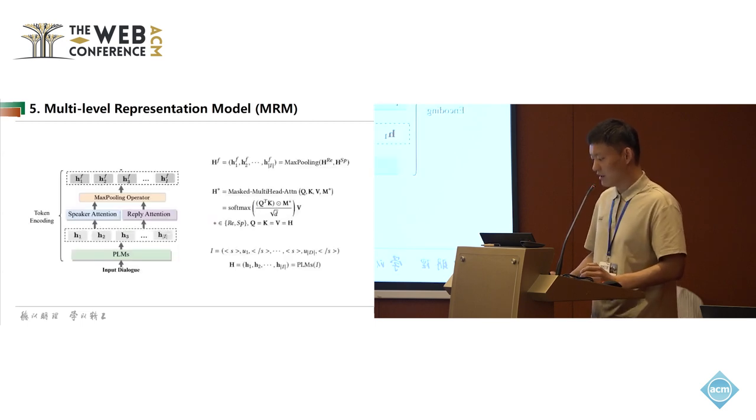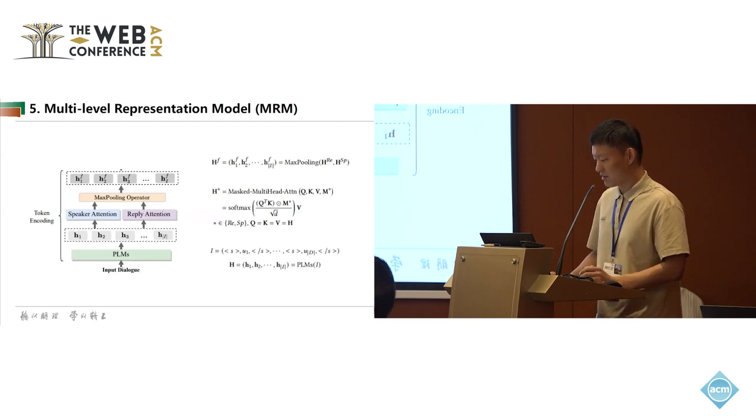At the token encoding stage, we first use pre-trained language models, such as RoBERTa, to obtain the vector representation of each token, namely h_i. Following previous works, we use multi-head attention mechanism and max pooling operator to model dialog structure information, namely speaker information and reply information, to update the vector representation of each token.